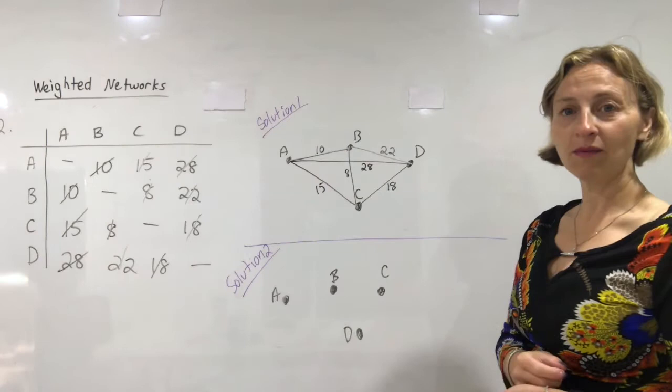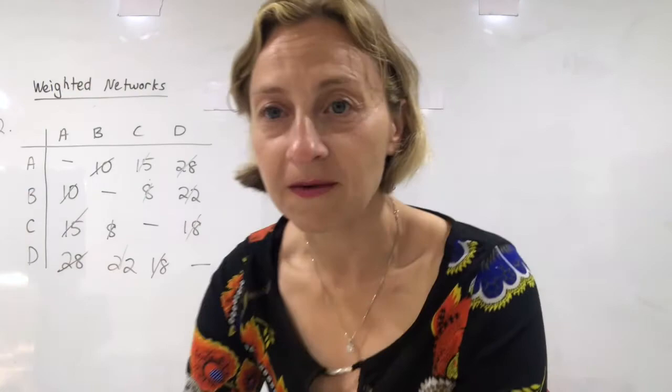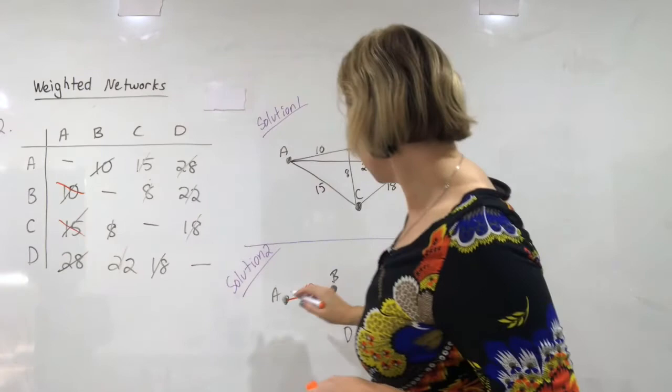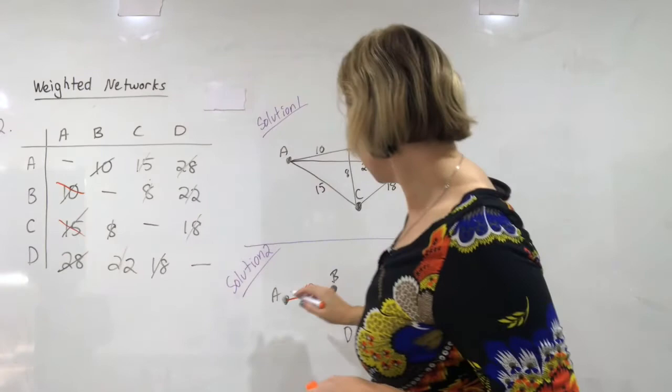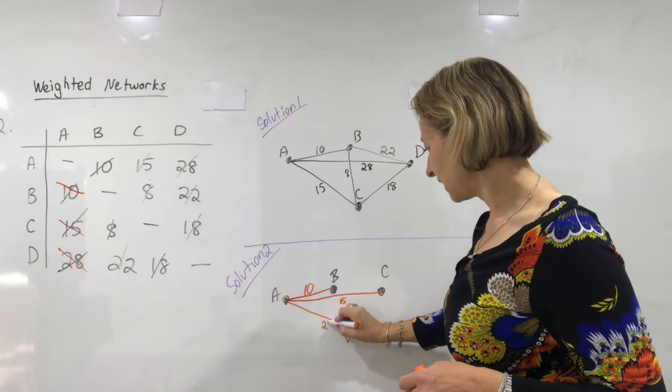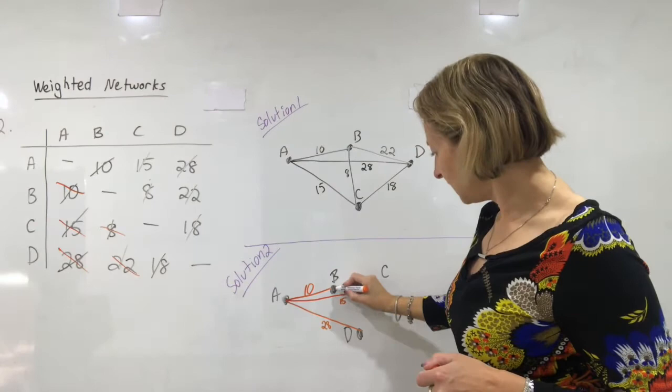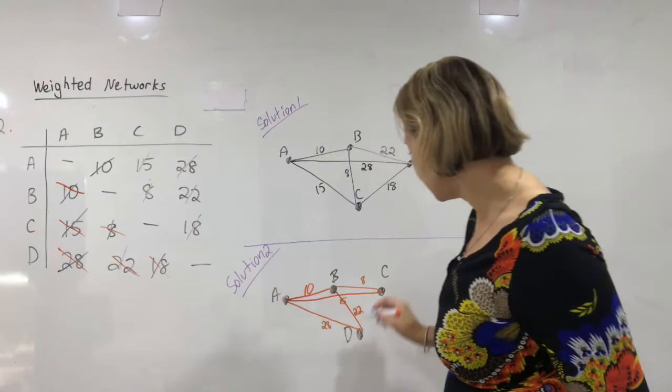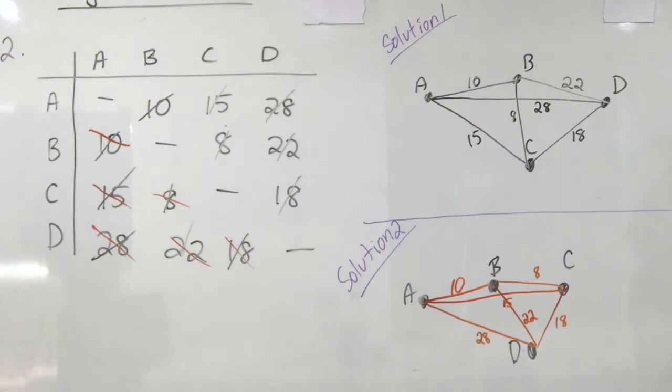Now I did tell you that we could draw the points in any order. So let's have a look at solution number two. And maybe I'll do it in a different colour so that we don't get confused. So A to B is 10. There's that. We'll cross them off in a different direction. A to C is 15. A to D is 28. There's D down there. A to D is 28. B to C is 8. B to C is 8. And B to D is 22. B to D is 22. And my last one is C to D is 18. Well they look pretty similar but I've got C and D the other way around.